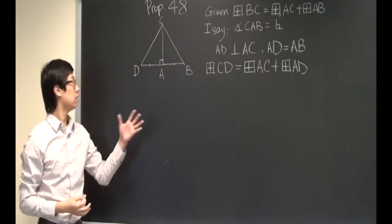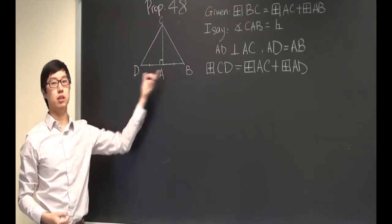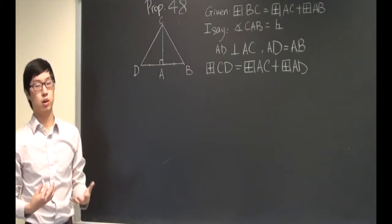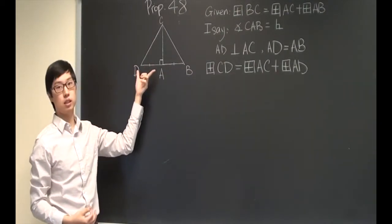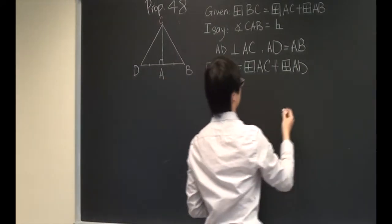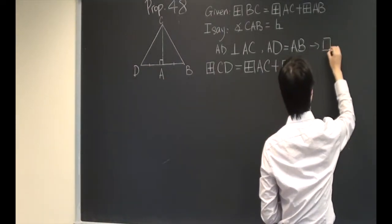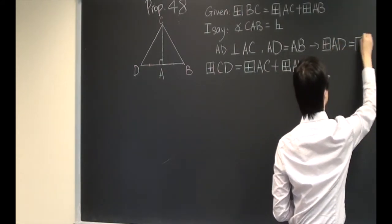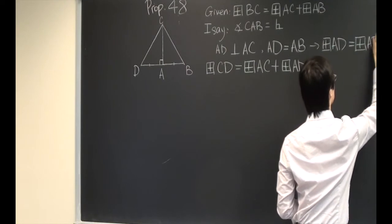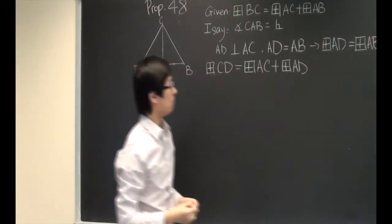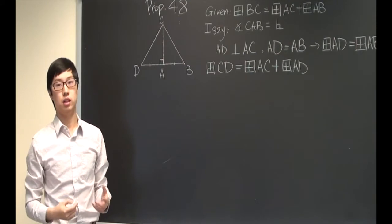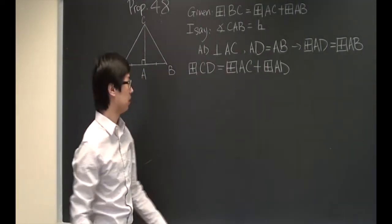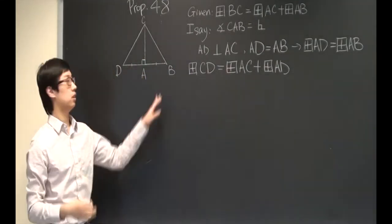But I've also constructed that AB is equal to AD. Therefore, square on AB is equal to square on AD. So let's substitute square on AD with square on AB and rewrite this.